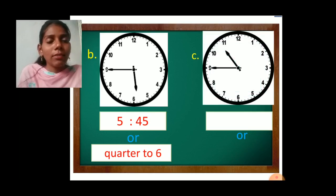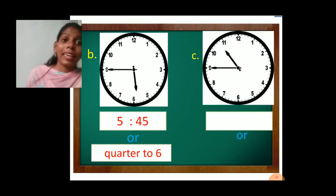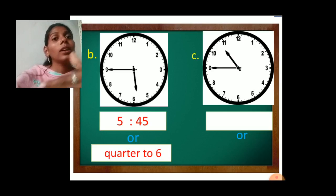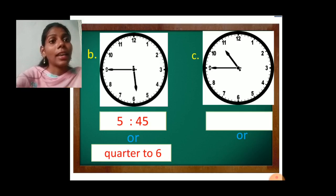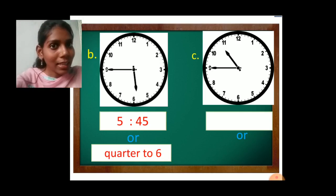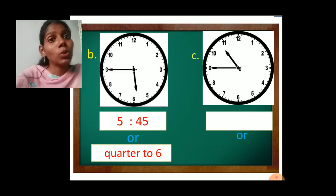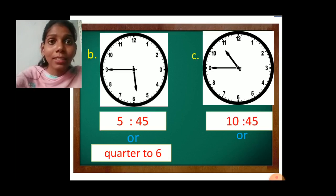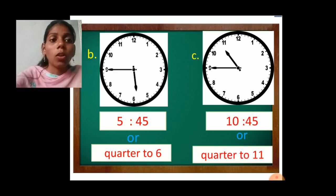Now C1. Again, the minute hand is at number 9 — it means 45 minutes, quarter to. The hour hand has crossed number 10, which means 10 hours 45 minutes. And it is about to reach 11, so it is quarter to 11. It is very easy — don't get confused. So it is 10 hours 45 minutes and quarter to 11.